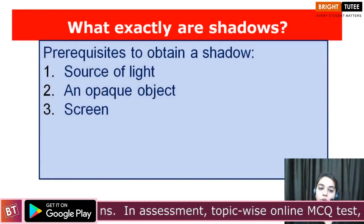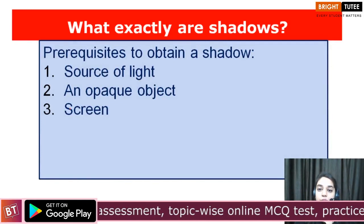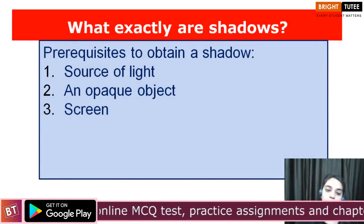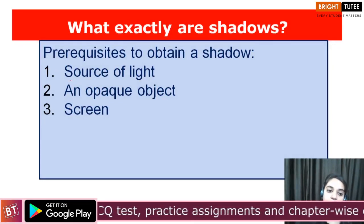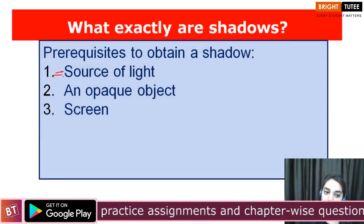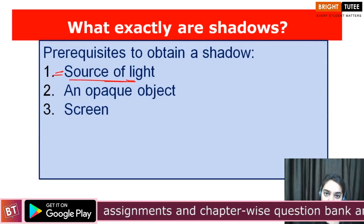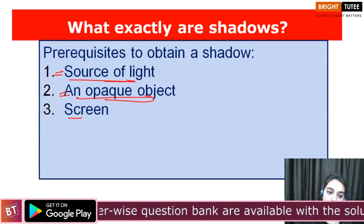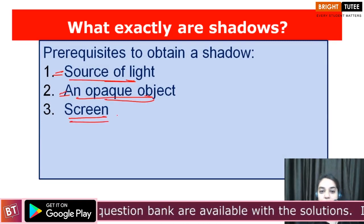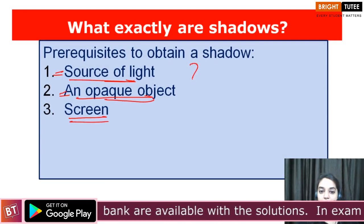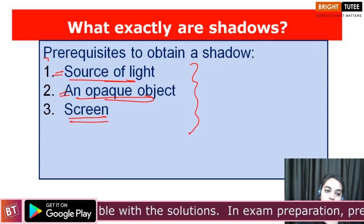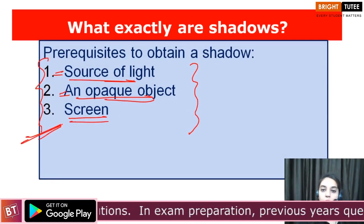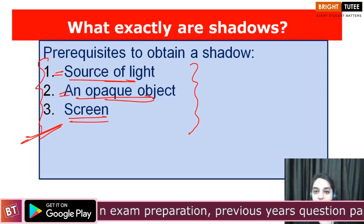So what are the prerequisites to obtain a shadow? We need a source of light — that is very important. Then we need an opaque object to block the path of light. And also we need a screen. These are the three important prerequisites required in order to create shadows.